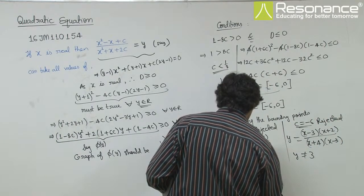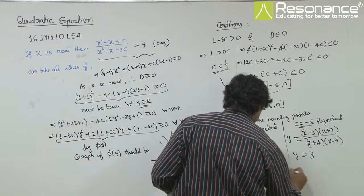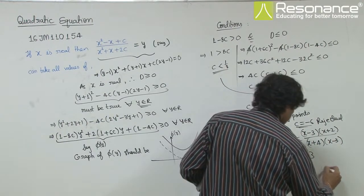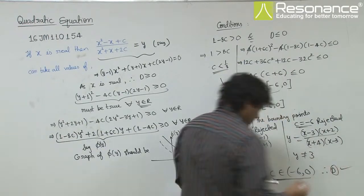Therefore, the answer is c must belong to minus 6 to 0 open interval. That means, option D is the correct option.